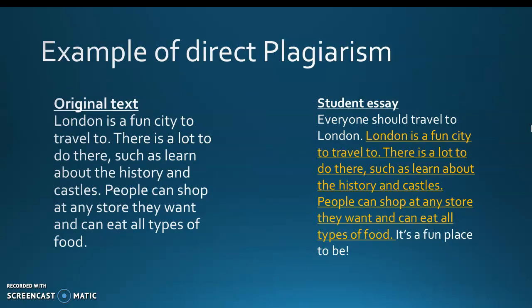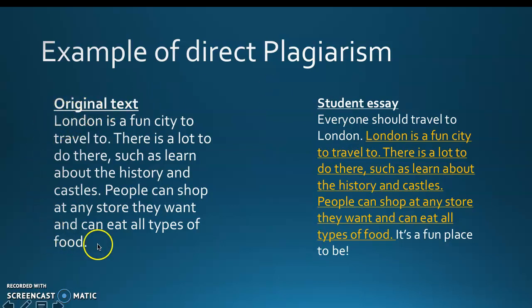Here's an example of direct plagiarism. If there was an article — this is the original text from it, this is a paragraph — and in a student essay, plagiarism can occur anywhere in a professional or academic situation. An example of direct plagiarism would be if the person copied this entire paragraph and pasted it directly into their paper. Everything underlined matches exactly, and there's no evidence of any kind of citation. That's an example of direct plagiarism.